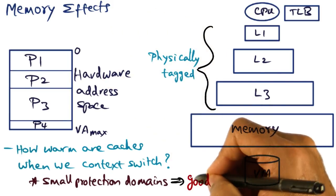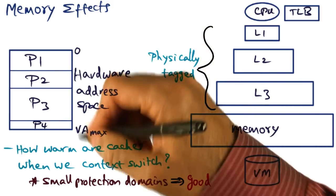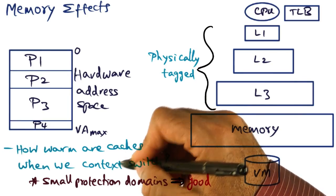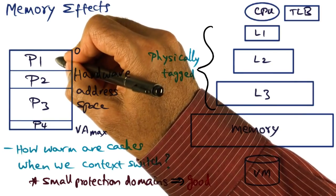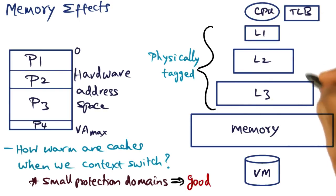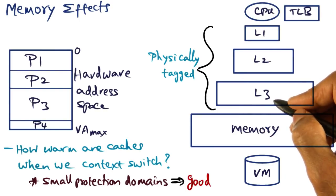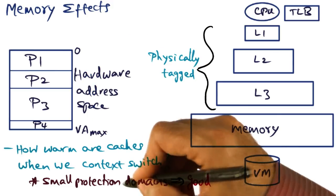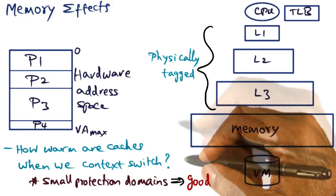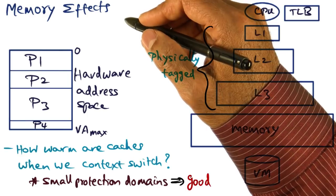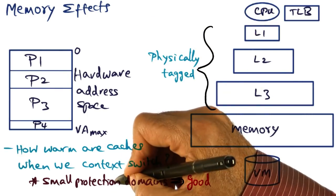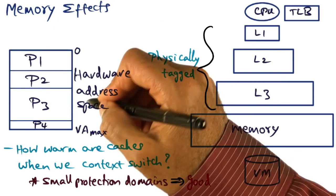So when we have small protection domains, then the caches are going to be pretty warm. Even when you do a context switch from one process to another process, there's a good chance that the cache hierarchy is going to contain the working set of the newly scheduled small protection domain. So in other words, the memory effects can be mitigated by carefully structuring the protection domains in the hardware address space.